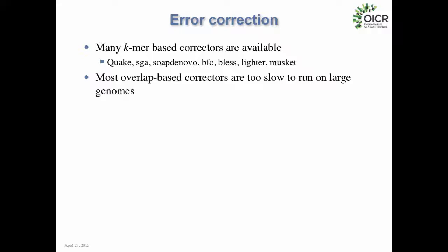There are many programs implementing k-mer-based error correction: Quake, SGA, SOAPdenovo, BFC, BLESS, Lighter, Musket, and more — about 10 to 15 published so far, with various trade-offs in memory, accuracy, and speed. BFC, written by Heng Li, is currently state-of-the-art in speed and accuracy. There are also overlap-based error correctors, but these are too slow for large genomes. For human-scale or plant genomes, k-mer-based approaches are the only ones that scale.